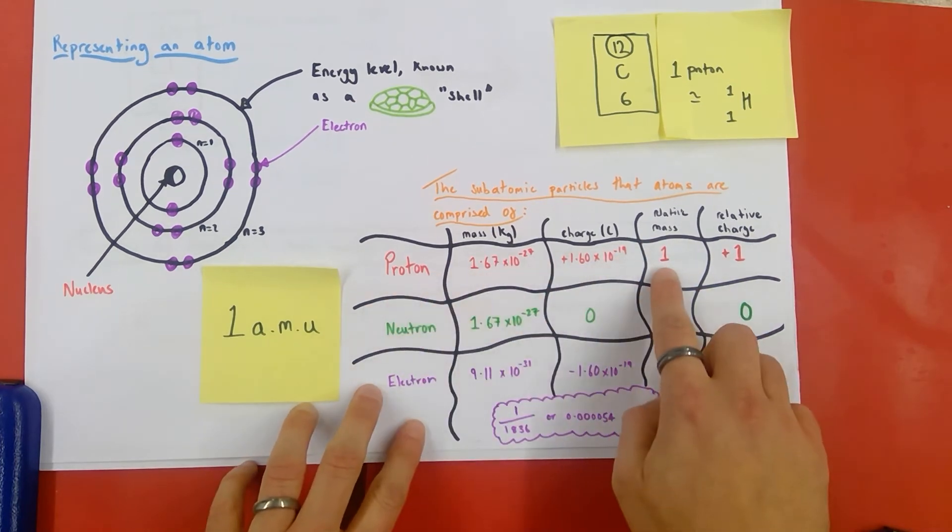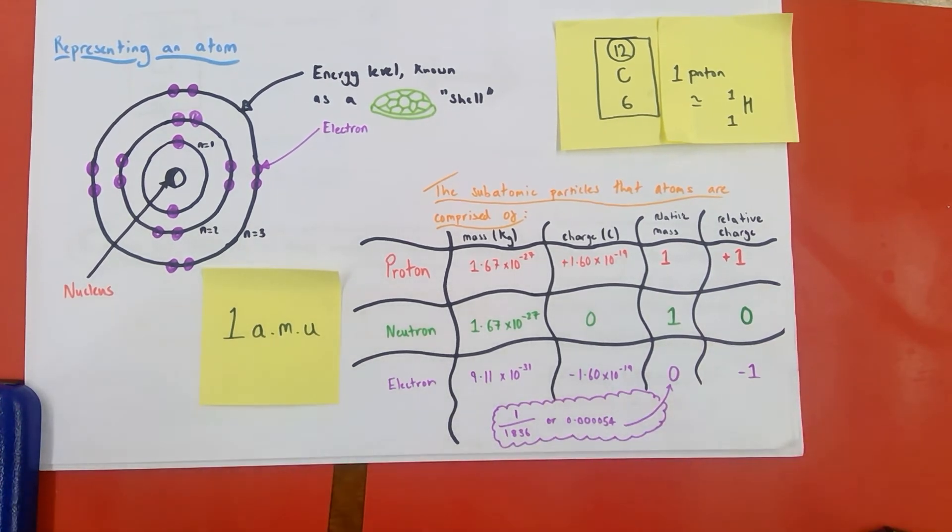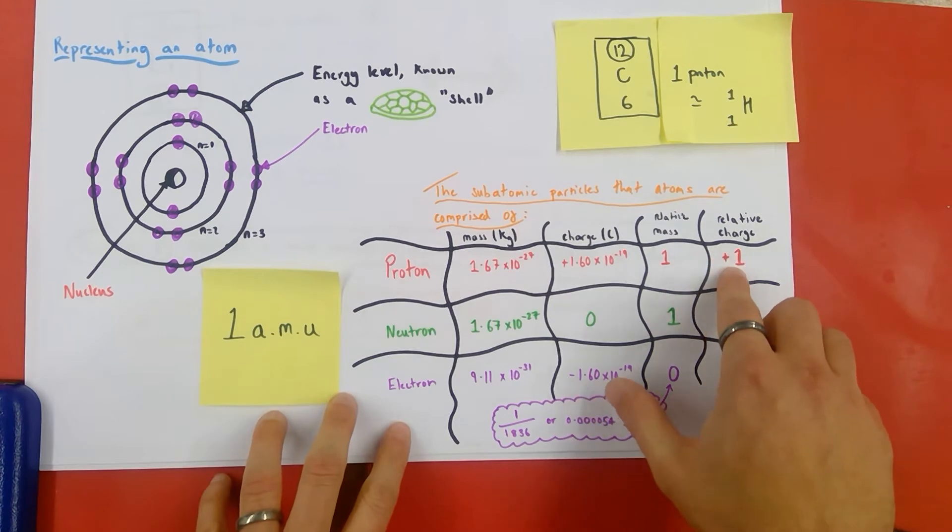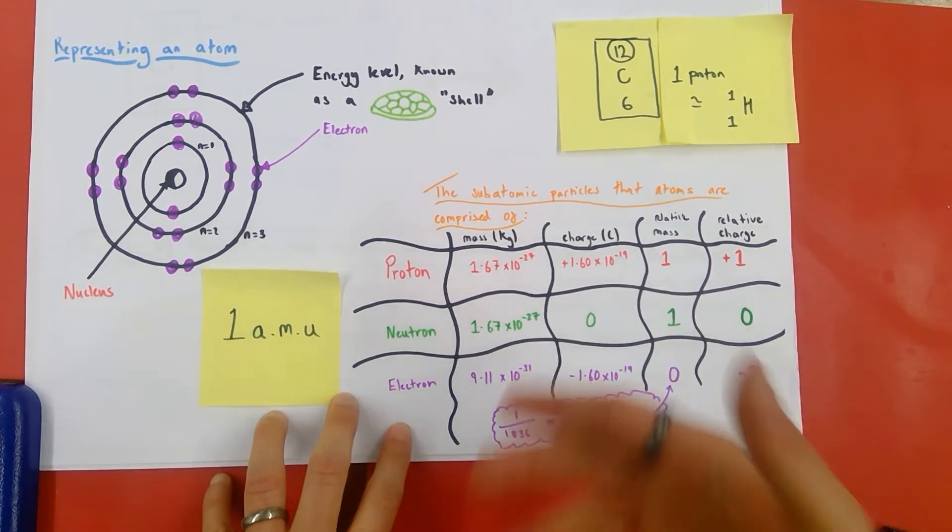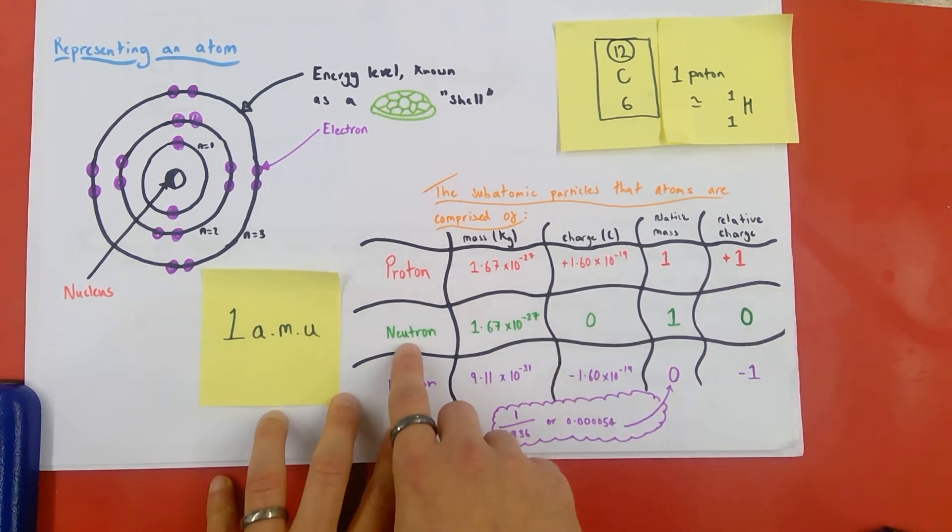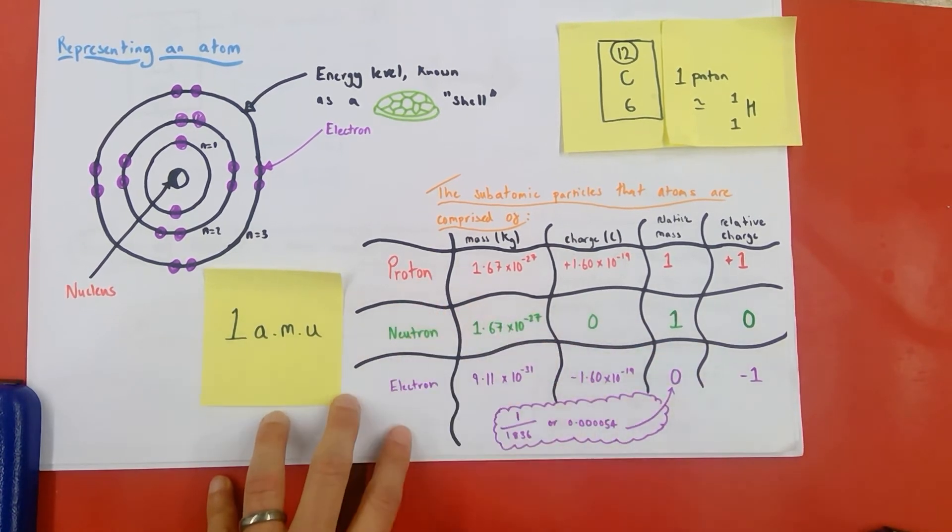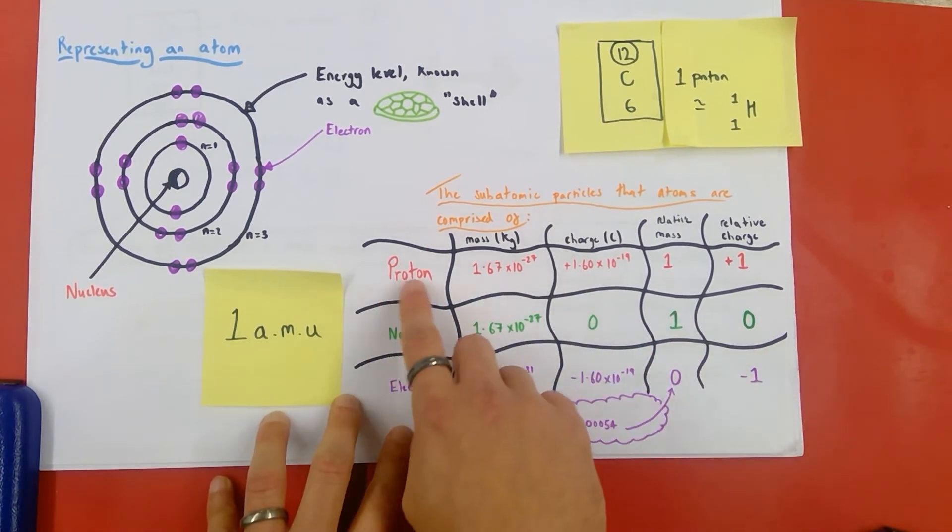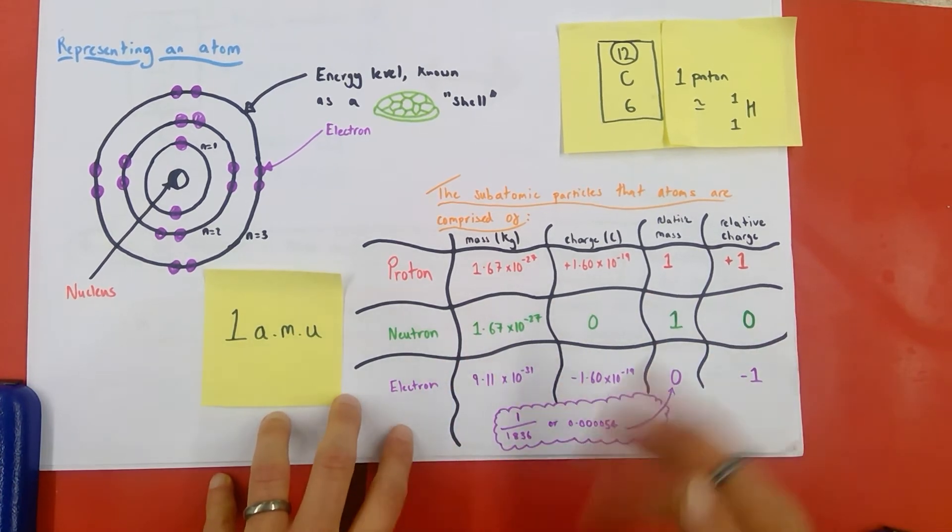So, a proton has a mass of 1, 1 atomic mass unit. And it's reasonably large on the scale of an atom in terms of mass. It has a relative charge of plus 1. Protons are positive. It kind of rolls off the tongue with the name proton. Neutrons also have a relative mass of 1 atomic mass unit. They're about as heavy and as large, having as much mass, as protons. But they are neutral. They have no overall charge. Neutron, neutral. Again, it's kind of rolling off the tongue.